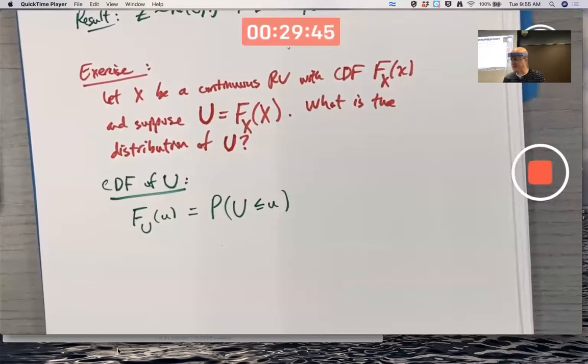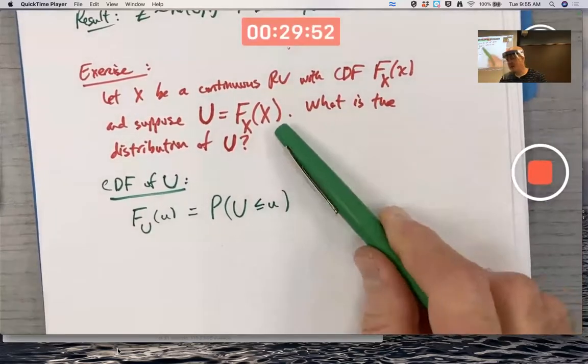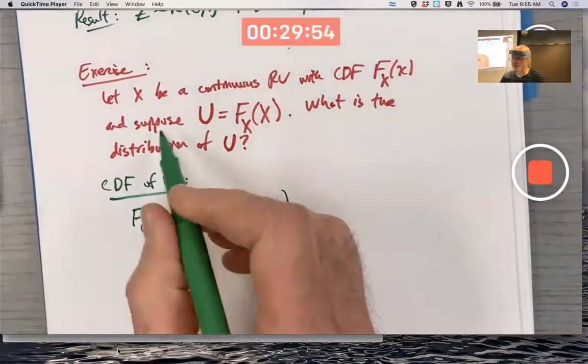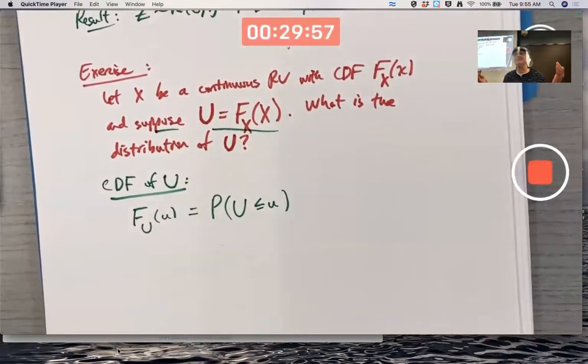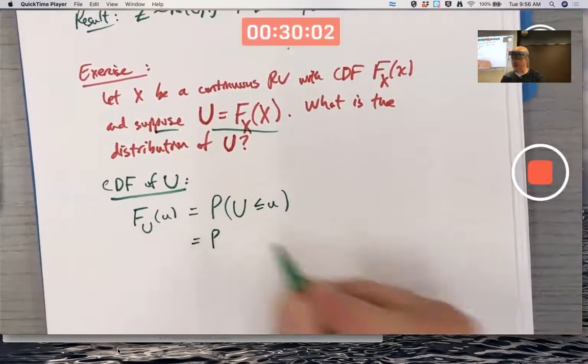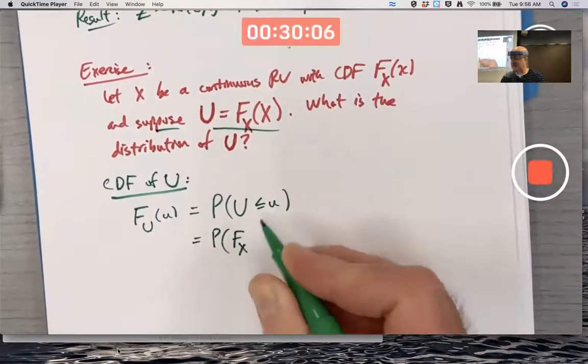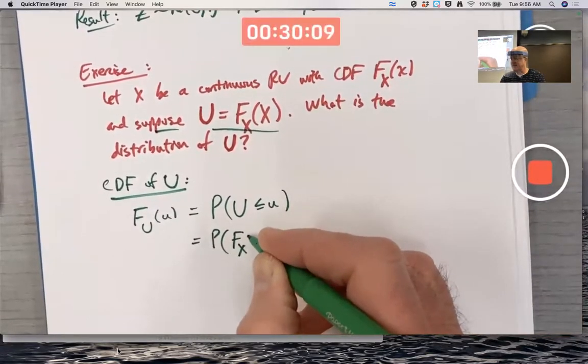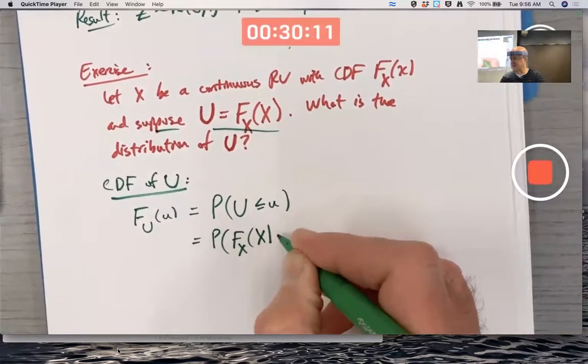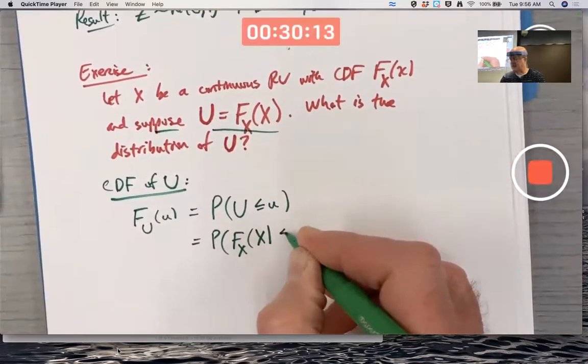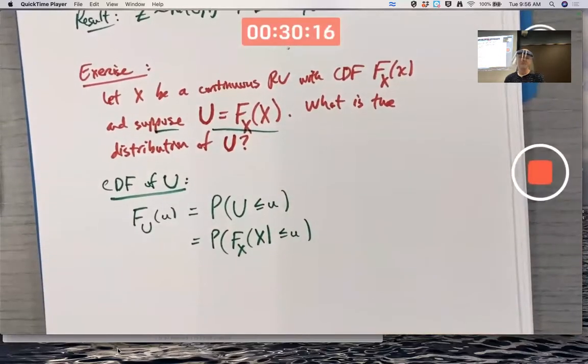What do you do with this? Here's how the light bulb goes off in your head: I better use what I'm assuming. I'm supposing U equals that, so I better use that somehow. The only thing to do is replace U with the CDF of capital X evaluated at capital X.